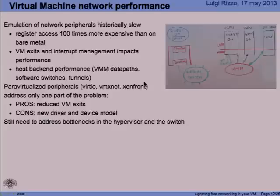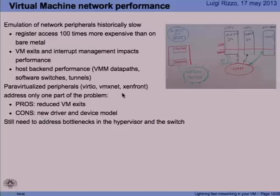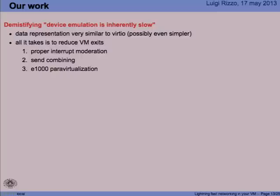The para-virtualized peripherals introduced over time by Xen, VMware, and the QEMU forks tried to solve the problem of an efficient device model that would work well under a hypervisor. However, those solve only one part of the problem. All the other bottlenecks I mentioned still exist, and they need to be dealt with in the hypervisor and in the software switch that connects virtual machines among themselves or to the physical NIC.